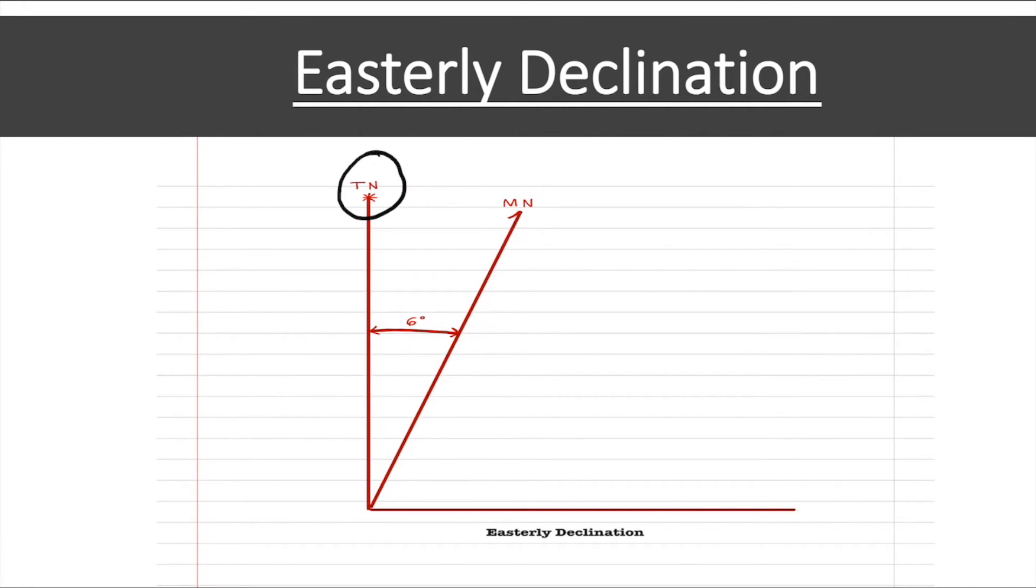Here you have true North there and you have magnetic North. Magnetic North is to the right of true North so here we have an easterly declination because your magnetic North is pointing towards the East and we have a six degree easterly magnetic declination here.